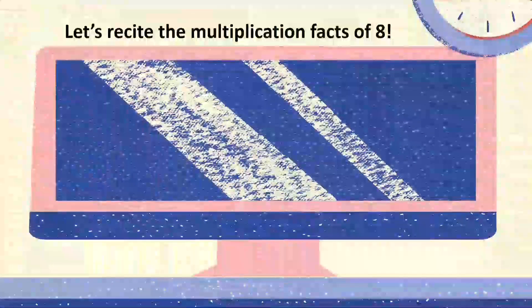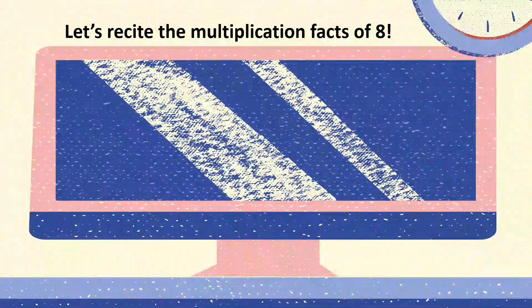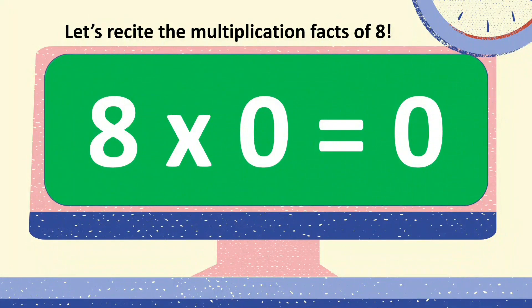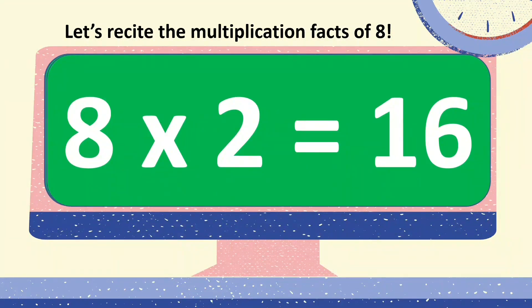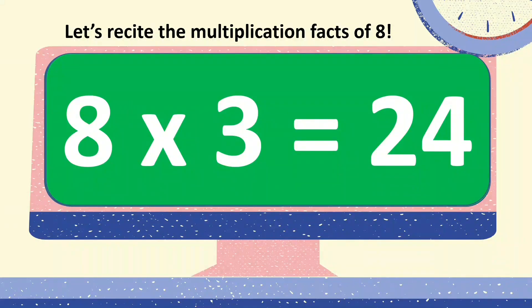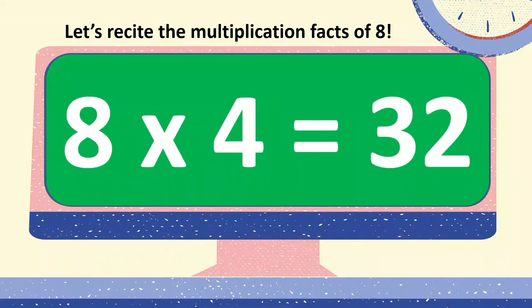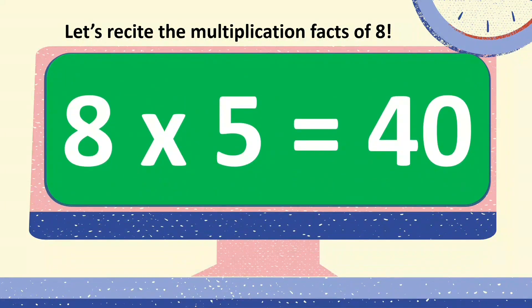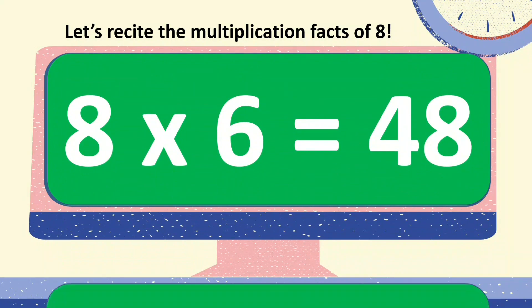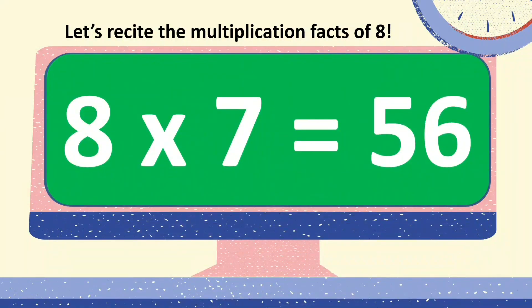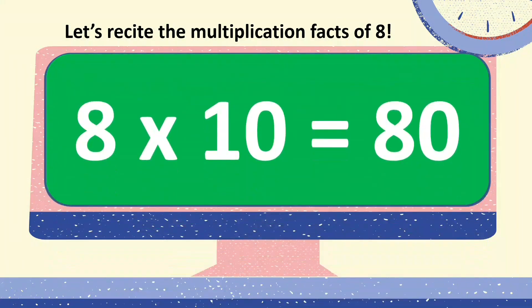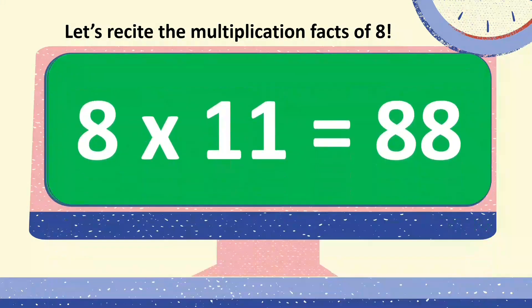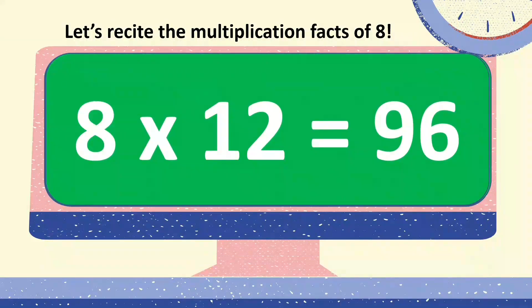Let's recite the multiplication facts of 8 together. 8 times 0 equals 0. 8 times 1 equals 8. 8 times 2 equals 16. 8 times 3 equals 24. 8 times 4 equals 32. 8 times 5 equals 40. 8 times 6 equals 48. 8 times 7 equals 56. 8 times 8 equals 64. 8 times 9 equals 72. 8 times 10 equals 80. 8 times 11 equals 88. 8 times 12 equals 96.